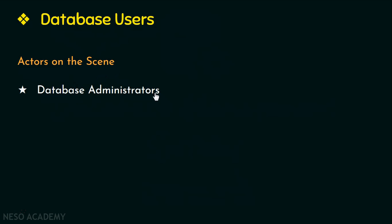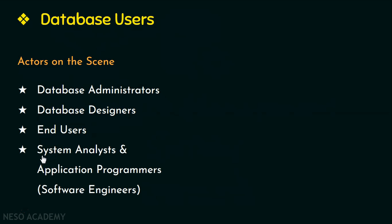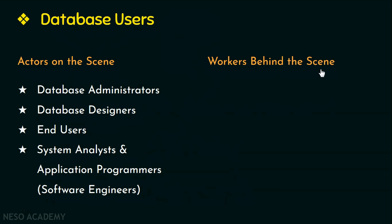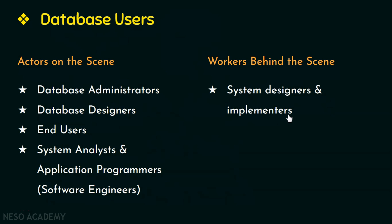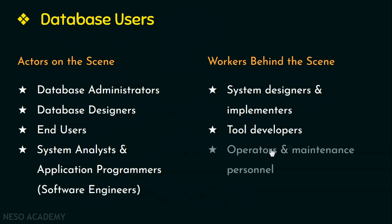Under actors on the scene we have four types of users: database administrators, database designers, end users, and system analysts and application programmers, also called software engineers. Next we have workers behind the scene — people whose work is to maintain the database system environment. They deal with the design, development, and operation of the database system environment and are not interested in the database itself.